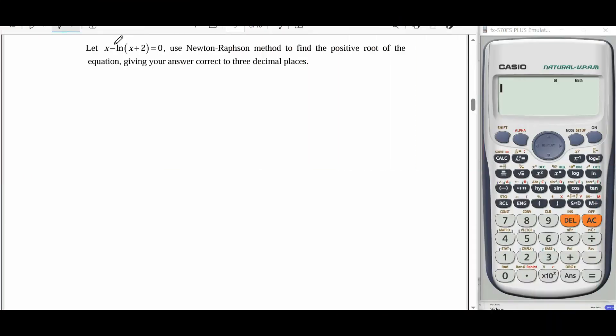Hi everyone, for this question it says let x minus ln(x+2) equals 0. Use Newton-Raphson method to find the positive root of the equation, giving your answer correct to 3 decimal places.